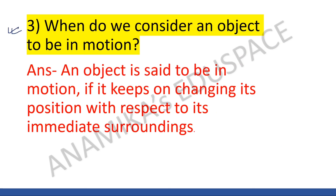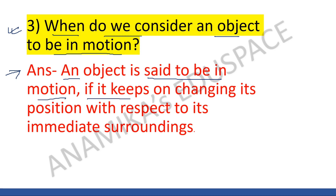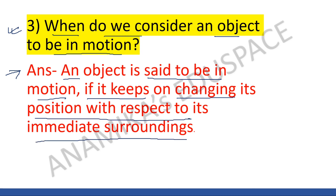Question number three: when do we consider an object to be in motion? An object is said to be in motion if it keeps on changing its position with respect to its immediate surroundings.